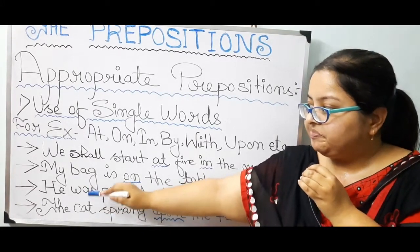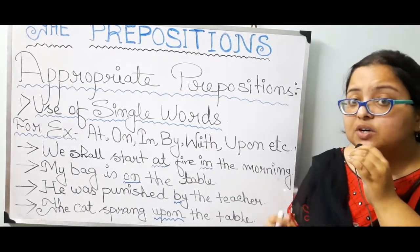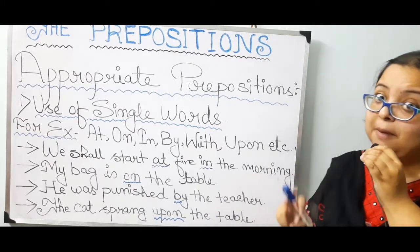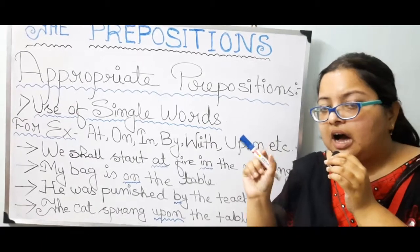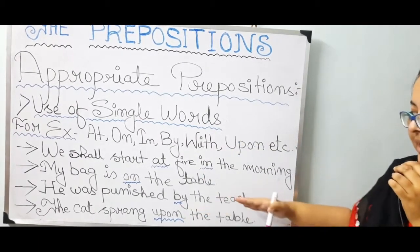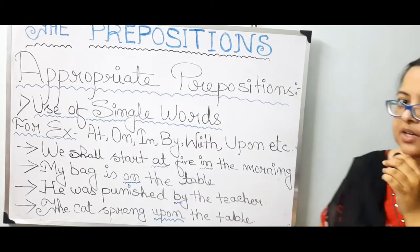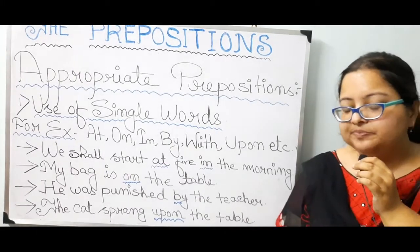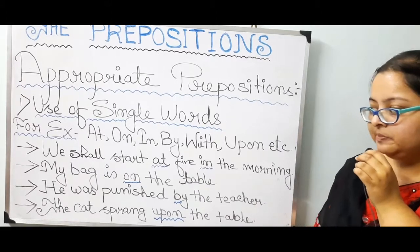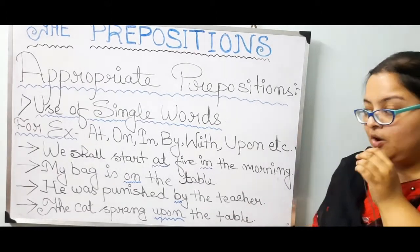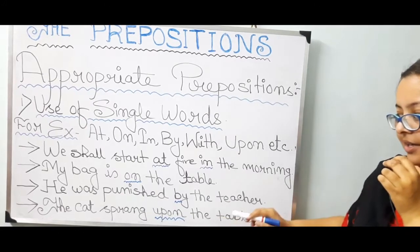Number 3: he was punished — by whom? It has been mentioned 'by the teacher'; 'the' is specifically telling that it is a particular teacher. So: by the teacher. Next, the cat sprang upon the table — you know how a cat jumps. So he sprang upon, he jumped on the table. According to the sentence, we have to put 'upon' — upon the table.